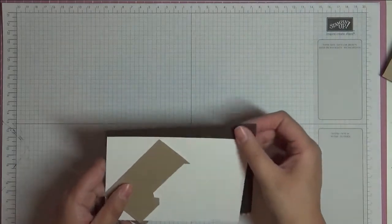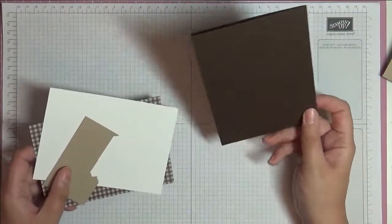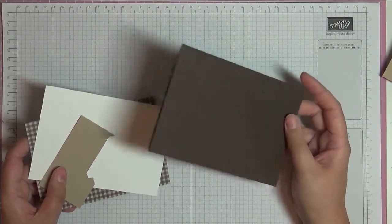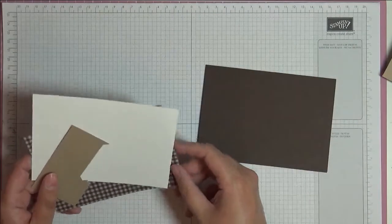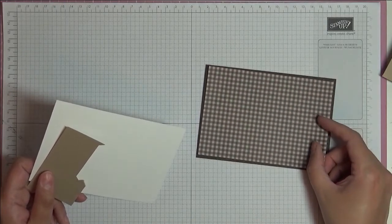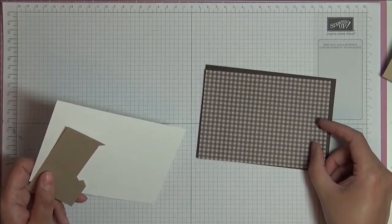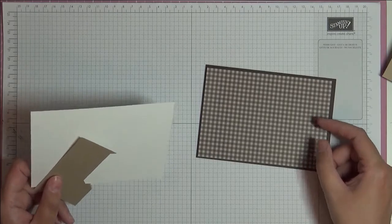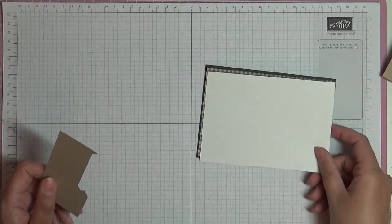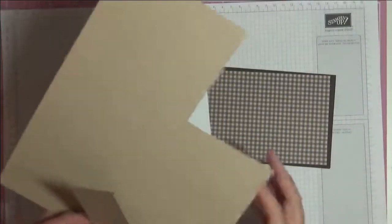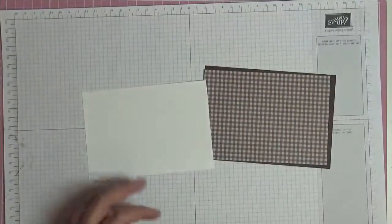The supplies you're going to need: I've used a base of Early Espresso, a standard A6 card base that's an A4 sheet cut in half and then folded. I've got a piece of designer series paper from the Family Stack, also Early Espresso, measuring 14.35 centimeters by 10 centimeters. I've got a piece of Whisper White which measures the same, and some scrap of Crumb Cake as well.